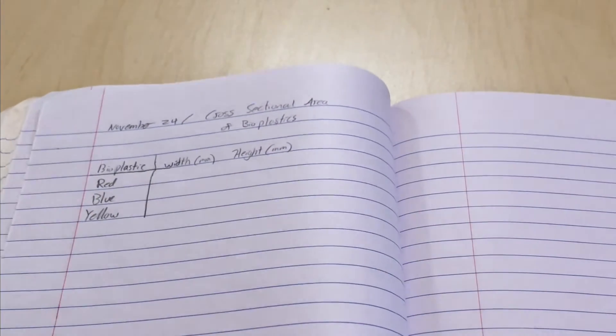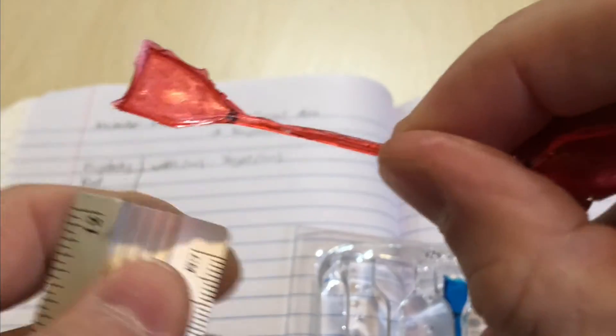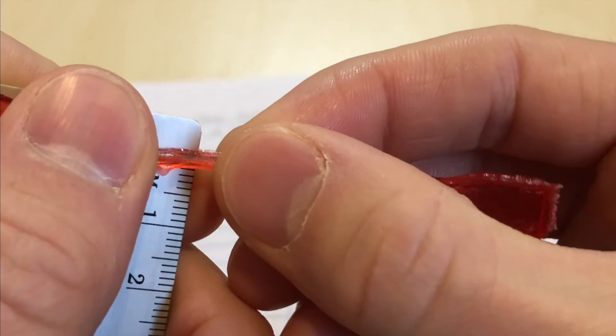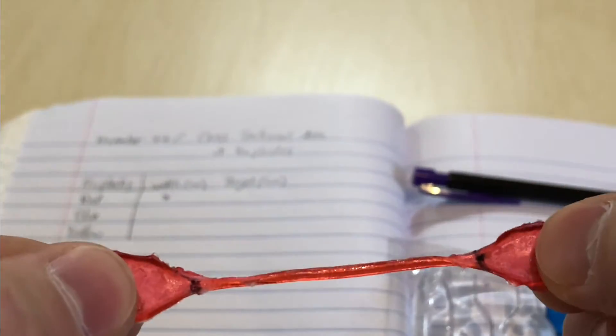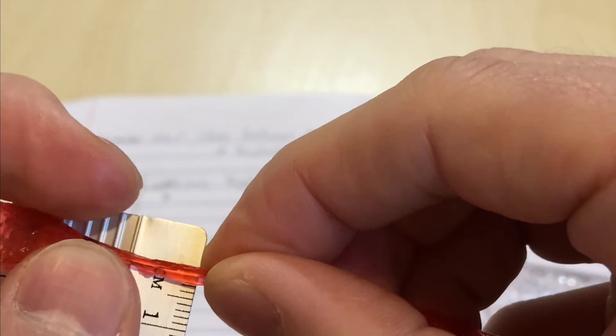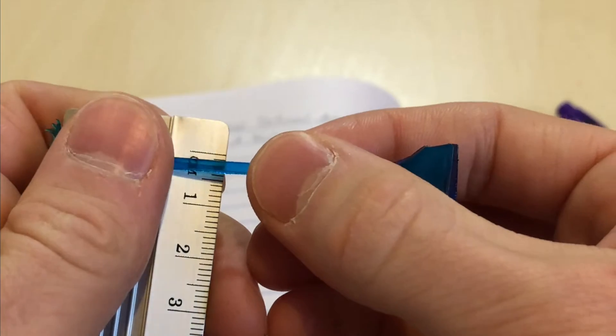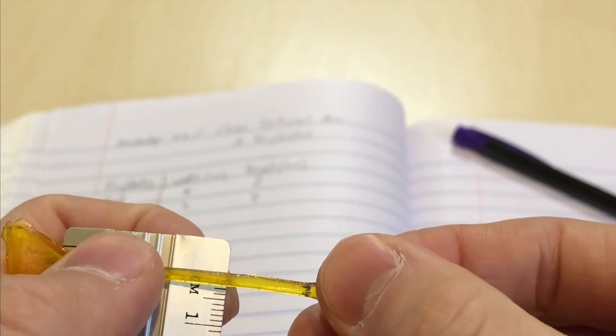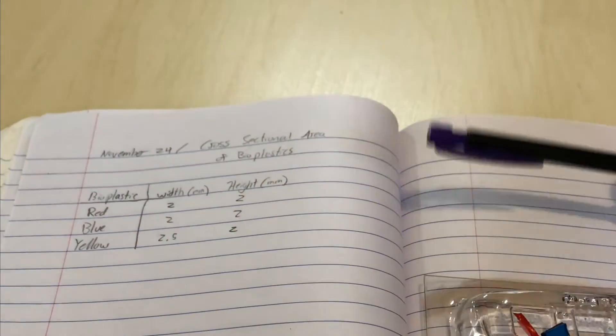Next, you will record in your notebook the width and height of the neck region of each bioplastic. Hold your dumbbell sideways so that you can see the wide part of the dumbbell. Then, hold it against the ruler along the millimeter mark and record the width in your notebook. Now, hold the plastic dumbbell flat and measure its height in the same way recording the value in your notebook. Measure the width and height of each of the three bioplastics and record it all in your notebook. The measurements of the width times the height will give us the cross-sectional area which will be used in our stress formula in video 2.